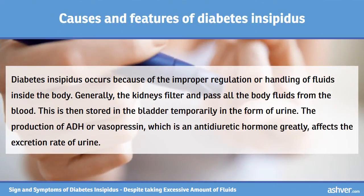Diabetes insipidus occurs because of the improper regulation or handling of fluids inside the body. Generally, the kidneys filter and pass all the body fluids from the blood, which is then stored in the bladder temporarily in the form of urine. The production of ADH or vasopressin, which is an antidiuretic hormone, greatly affects the excretion rate of urine.